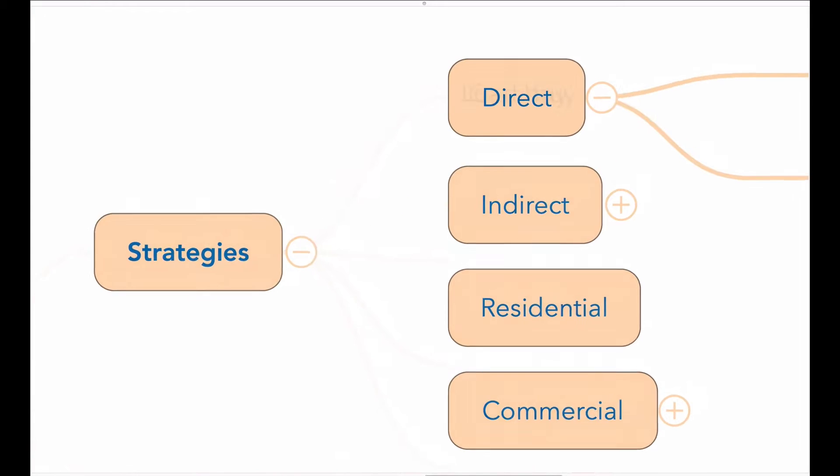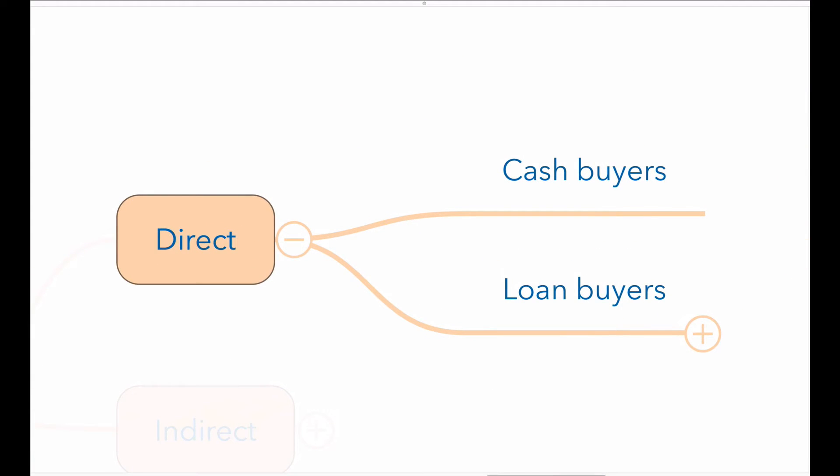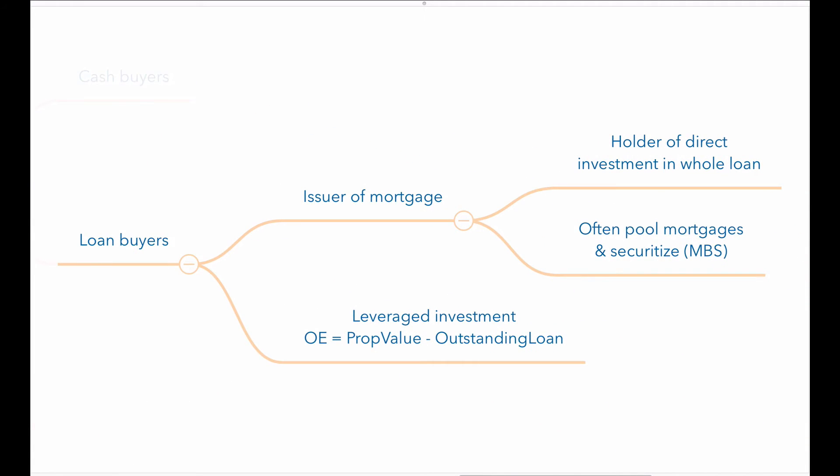A direct investment in real estate may involve a buyer paying cash for a residential property. Most buyers take on a mortgage, that is they borrow to purchase the property. The issuer or lender of the mortgage is the holder of the mortgage and has a direct investment in a whole loan.